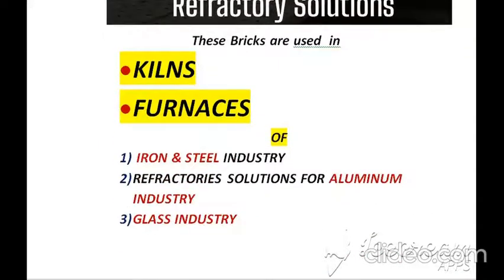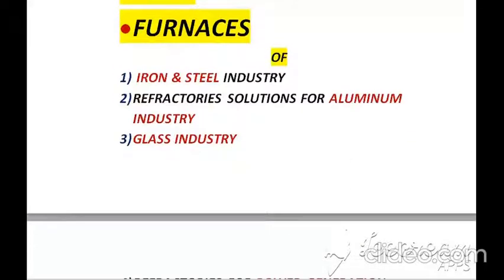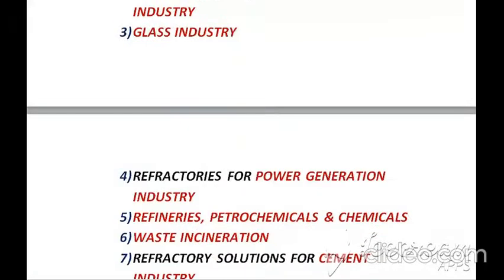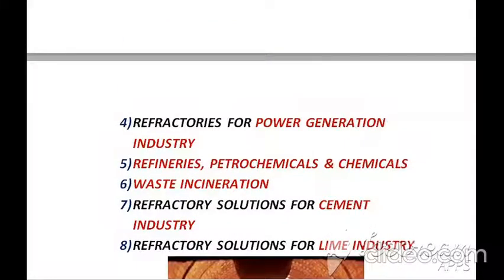The first industry is iron and steel, the second is aluminium, the third is glass, the fourth is power generation, the fifth is refineries, petrochemicals, and chemical industries, the sixth is waste incineration, the seventh is the cement industry, and the eighth is the lime industry.